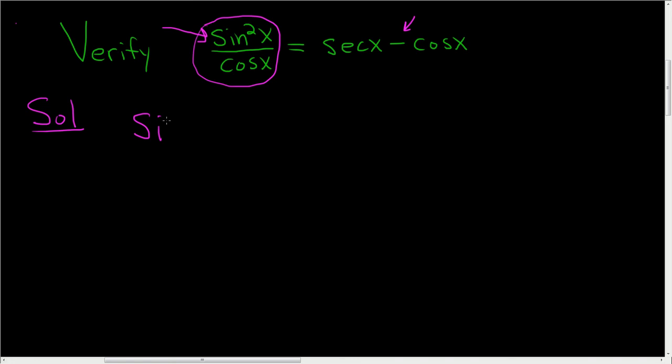So sine squared x over cosine x. Well sine squared is 1 minus cosine squared x. This is over cosine x.